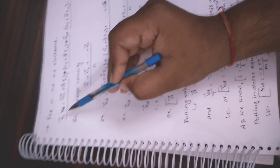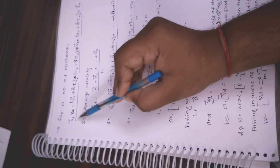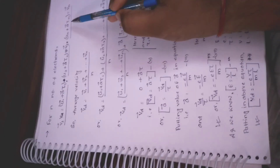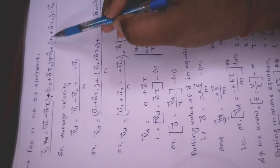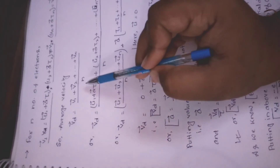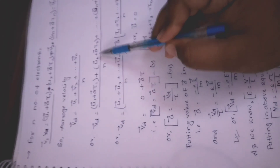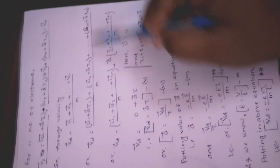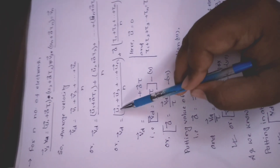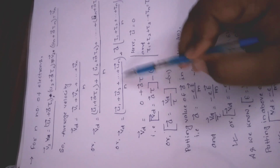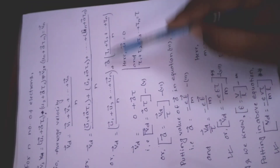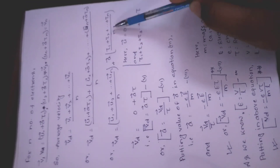अलग-अलग electrons के लिए अलग-अलग velocity होगी। तो: V1 = U1 + A·tau1, V2 = U2 + A·tau2, ... VN = UN + A·tauN। Average velocity निकालने के लिए: (V1 + V2 + ... + VN)/N = (U1+U2+...+UN)/N + A·(tau1+tau2+...+tauN)/N।